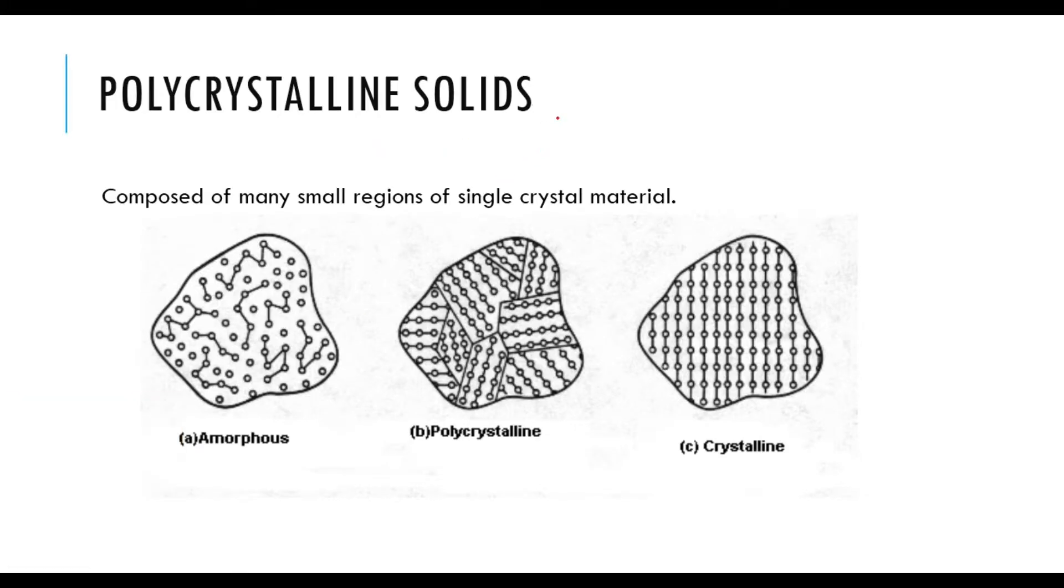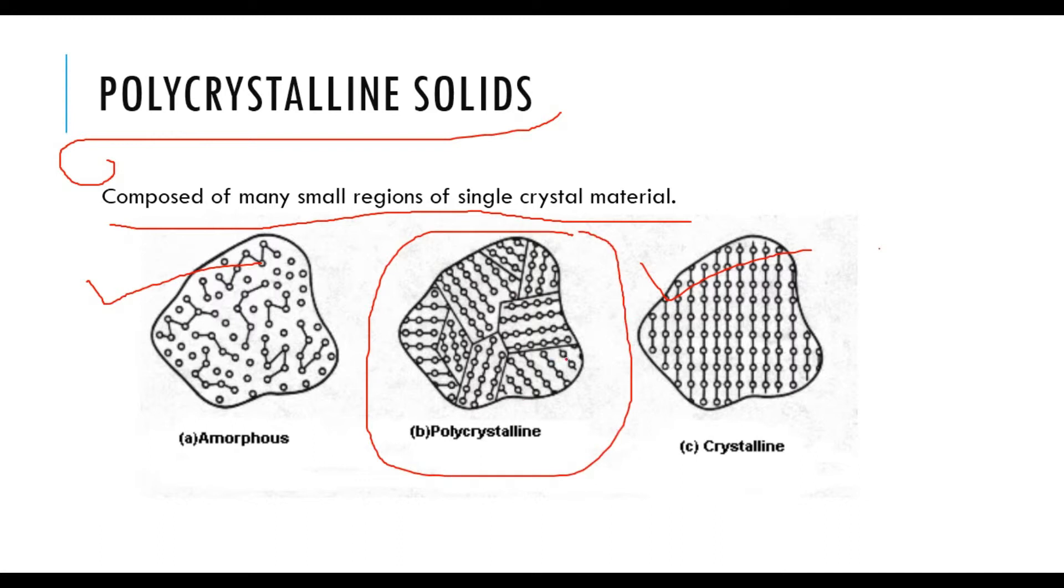Let's move on to the third type of solid, polycrystalline solid. It is composed of many small regions of single crystal materials. In the last slide we saw amorphous solid and crystalline solid. Now we're going to see polycrystalline solid. Here you can see that in this block, this part is crystalline in nature.